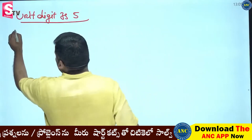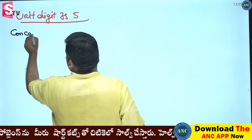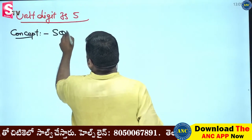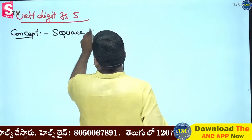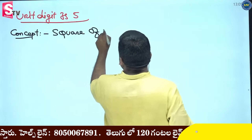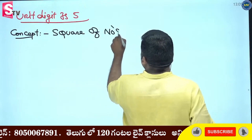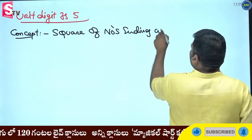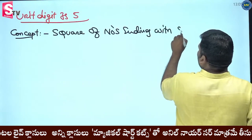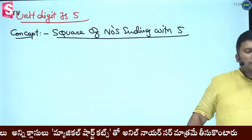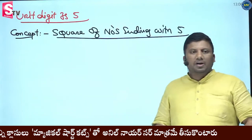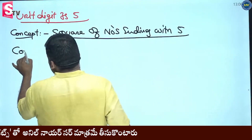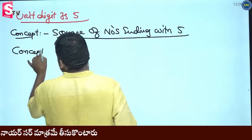Concept: square of the numbers ending with 5. There are 3 important concepts. Let's go through them one by one — 3 important concepts on squaring numbers ending with 5. Concept 1.